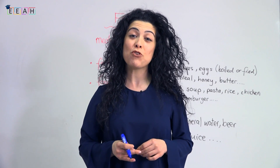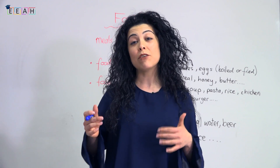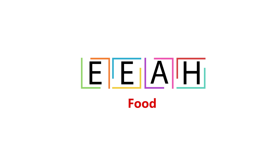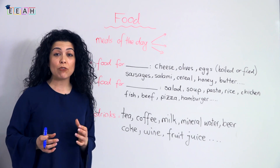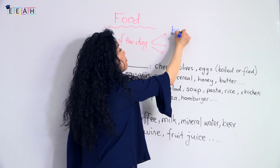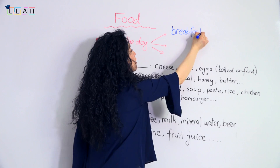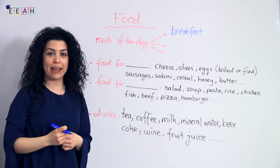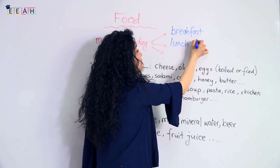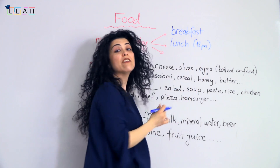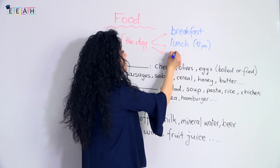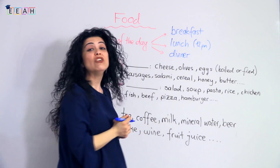Hello, welcome to Easy English at Home YouTube channel. Today I'm going to teach you some food vocabulary and meals of the day. Let's learn the meals of the day first. In the mornings we have breakfast — breakfast is the first meal of the day. Then we have lunch at around 12 p.m., at noon. The last meal of the day is dinner, which we have in the evenings.